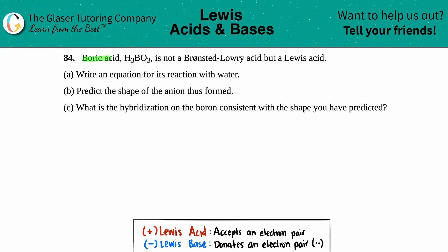Problem 84: Boric acid, H₃BO₃, is not a Bronsted-Lowry acid but a Lewis acid. Part (a) asks to write an equation for its reaction with water. So we have H₃BO₃ plus H₂O and we need to find the two products. They told us boric acid will act as a Lewis acid, which means water has to act as the Lewis base.